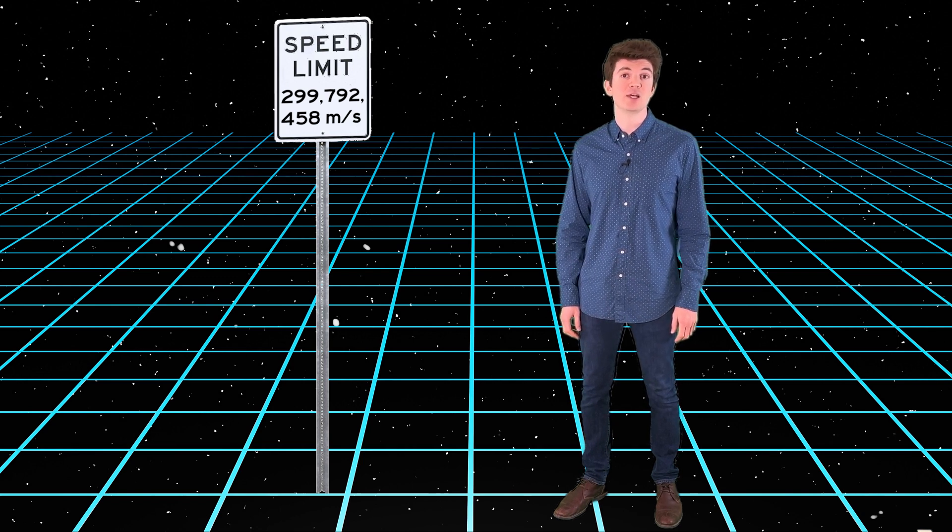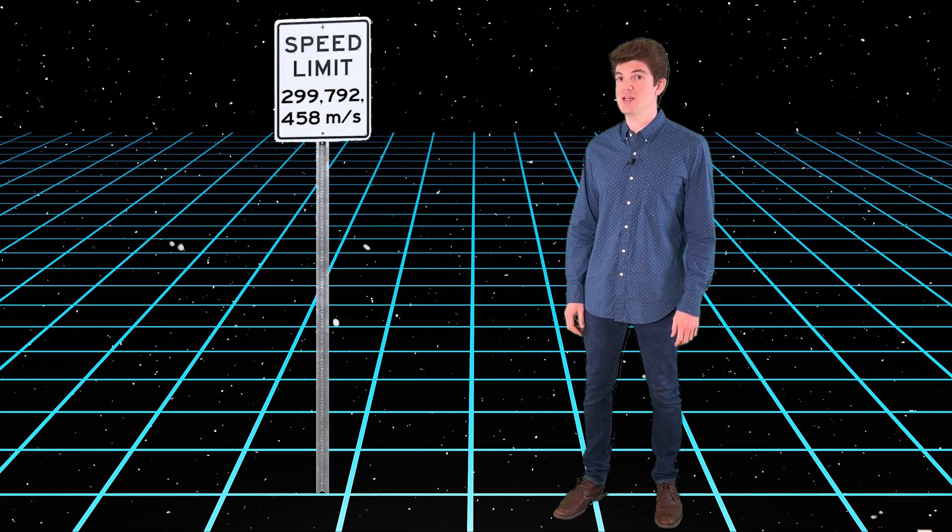Some things, like light, travel at that speed limit, which is why the speed of information is sometimes referred to as the speed of light. Gravitational waves also travel at that speed.